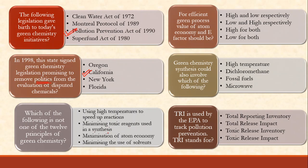Which of the following is not one of the 12 principles of green chemistry? Using high temperatures to speed up reactions, minimizing toxic reagents used in synthesis, maximization of atom economy, or minimizing the use of solvents? Atom economy is the second principle, minimizing solvent use is around the fourth or fifth, minimizing toxic reagents is the fourth. High temperature is never suggested — in fact, energy efficiency is recommended. So the answer is: using high temperatures.